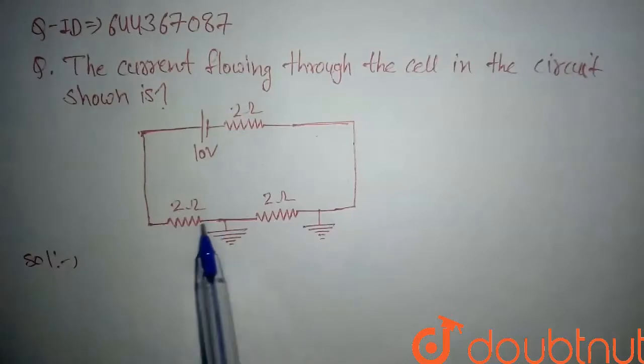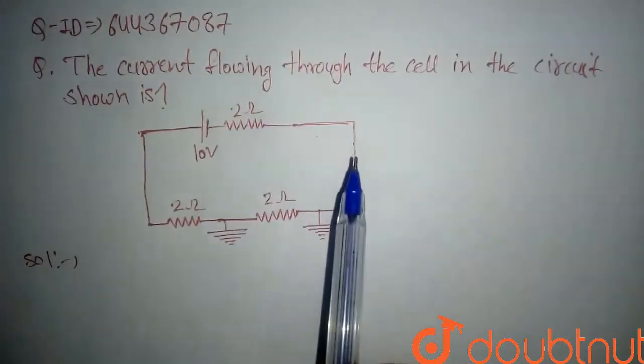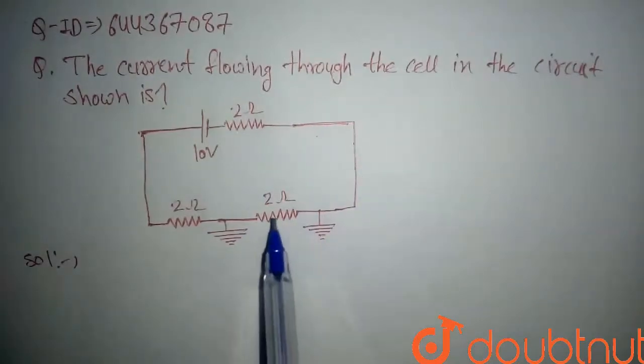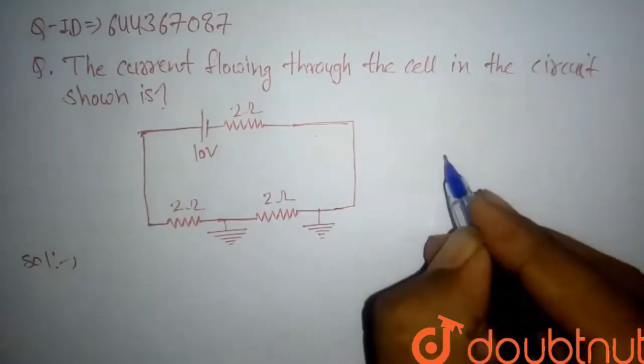Also, if any current comes through this circuit, it goes to ground, but no current flows through this 2-ohm resistor. So we will redraw the circuit here.